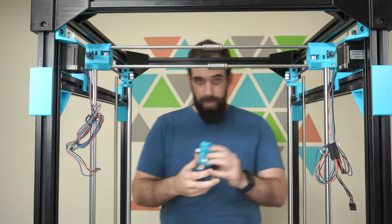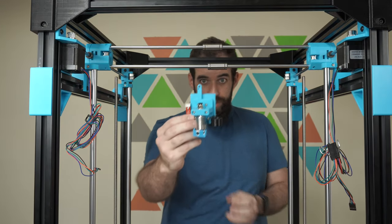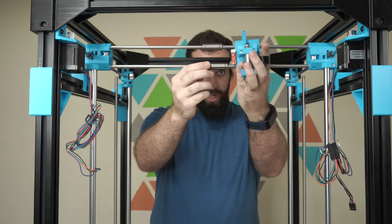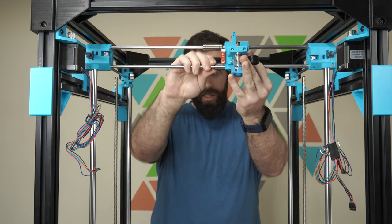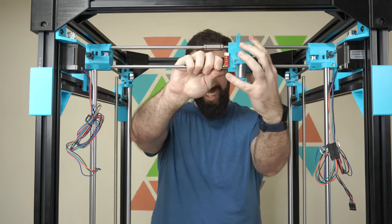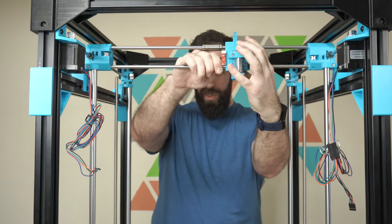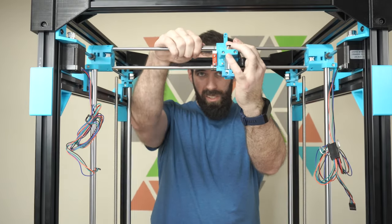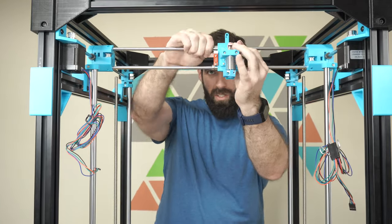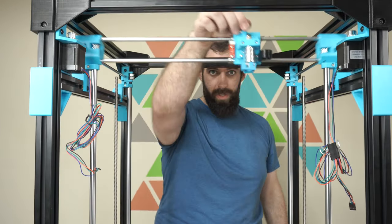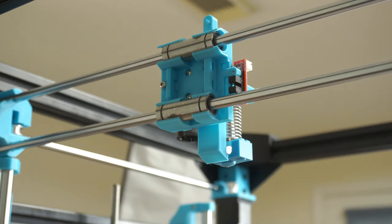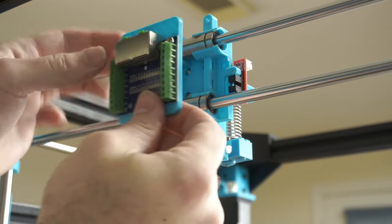So now we're just going to slip the X-axis carriage onto the rails, and then we'll just slide the bearings straight into the carriage. It helps if you twist it a little bit, and this will just snap right on.